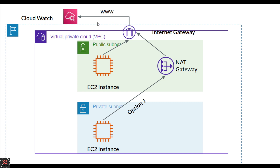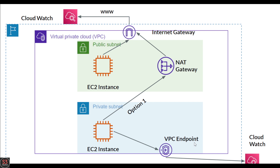That first option — using NAT gateway and internet gateway — is a very long path. With the second option, we create a VPC endpoint to access the CloudWatch service directly. The private instance uses the VPC endpoint to connect to CloudWatch, which is a very easy and short path. Comparing both options, creating a VPC endpoint is much better than using the NAT gateway and going through a long route.